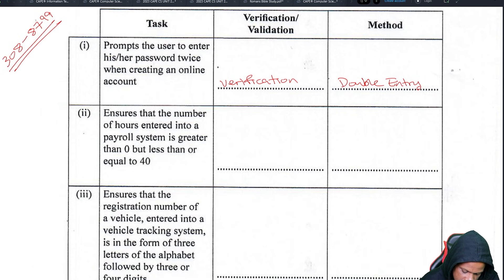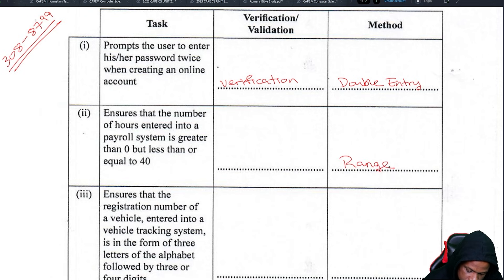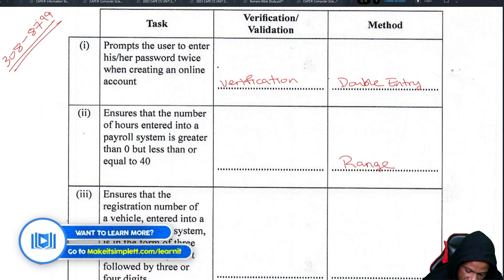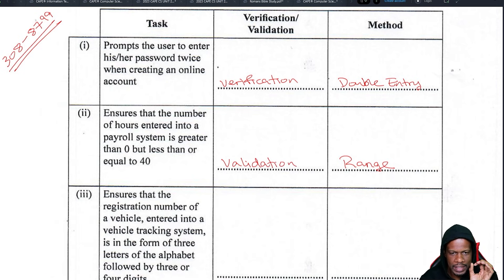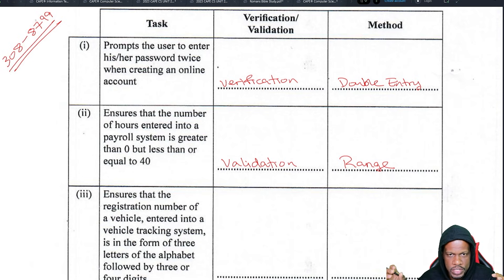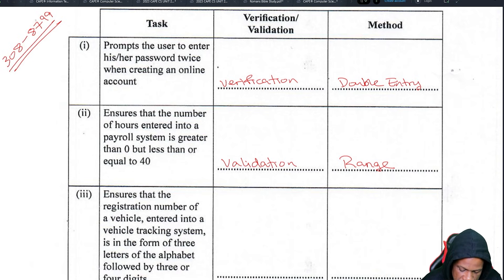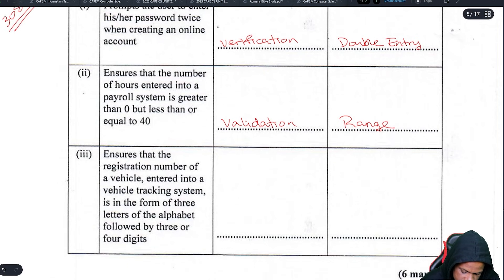Ensures that the number of hours entered into a payroll system is greater than zero but less than 40 — that is a range check. A range check is a validation check because it has to be a valid number acceptable to that range between zero and 40. Any number outside that range is not valid.